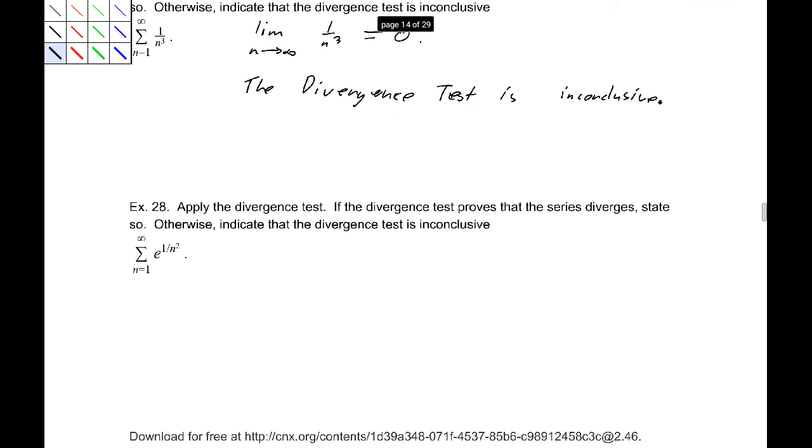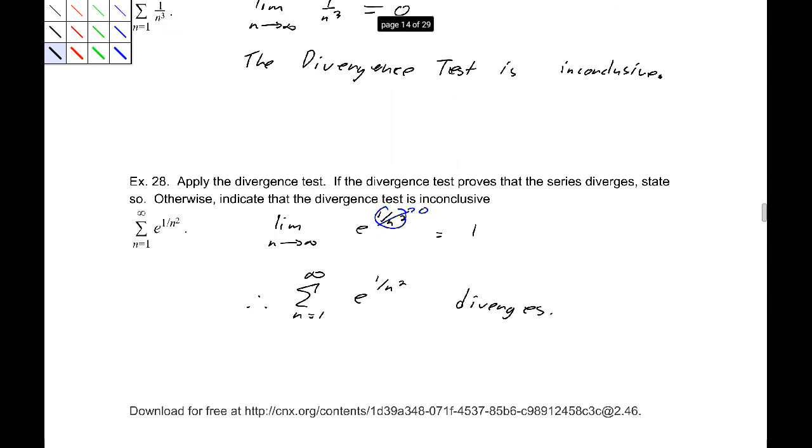Alright, let's apply that to 28. Well, if I take the limit of e to the 1 over n squared, well, this exponent is going to zero. So this is approaching 1. Therefore, n equals 1 to infinity of e to the 1 over n squared diverges.